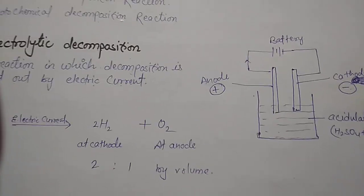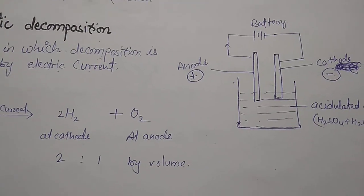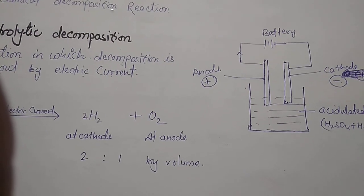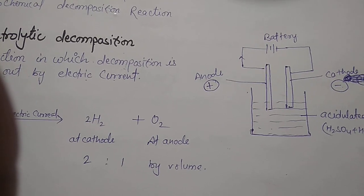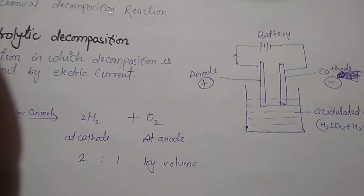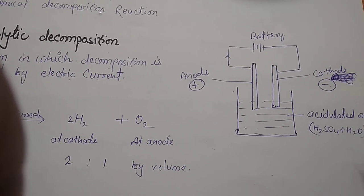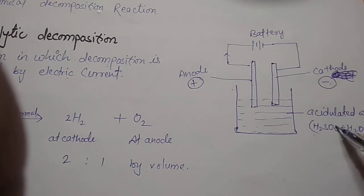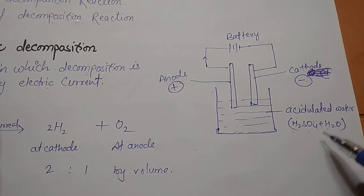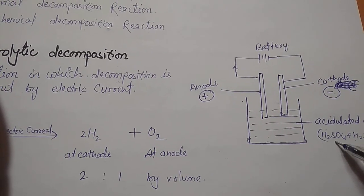When we switch on the battery, we observe there is no effect in the water. This is because pure water does not contain any ions, that is why it cannot conduct electricity. We know that pure water is a poor conductor of electricity. So, to make it a good conductor, we have to add a little amount of acid in the water, and it will become acidulated water. Acid contains ions, that is why it will conduct electricity.